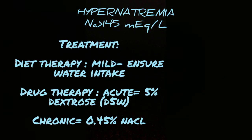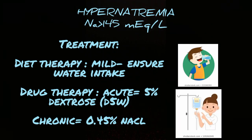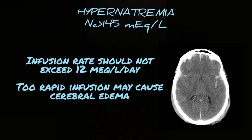Hypernatremia can be treated by diet therapy or drug therapy. For mild cases, the patient is advised to drink adequate amounts of water. Drug therapy is given for severe hypernatremia: for acute cases, 5% dextrose or D5W is given intravenously; for chronic cases, 0.45% NaCl is given intravenously. The infusion rate must also be monitored — if it exceeds 12 mEq/L per day, it may cause cerebral edema.